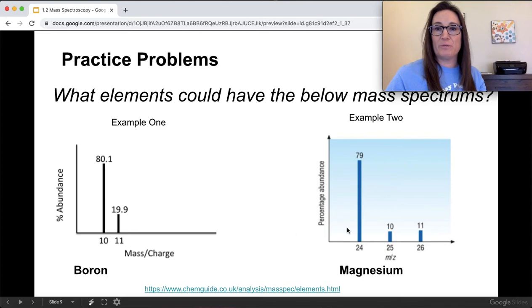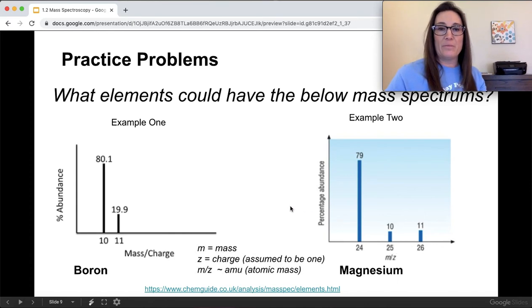Next, this would be magnesium. If you look up magnesium, it's got 24.305, so it's got a little bit higher than 24. And again, the formula on the bottom here, mass divided by charge, we basically assume that the charge is 1, so this m divided by z can just be the atomic mass for most of these spectrums.